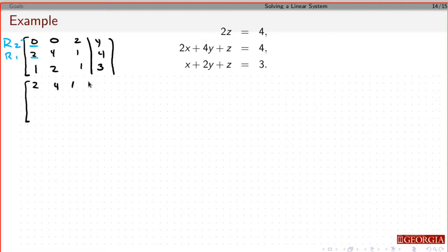This will be 2, 4, 1 is equal to 4. 0x, 0y, 2z is 4, and 1x plus 2y plus z is 3.